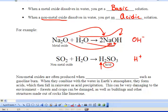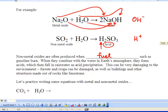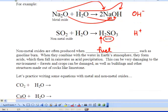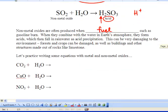Non-metal oxides are often produced when fuels such as gasoline burn. When they combine in the Earth's atmosphere, they form acids. This is how acid rain forms. The water dissolves a non-metal oxide and then it falls down and we get acid on the rocks or buildings and other structures made out of limestone.